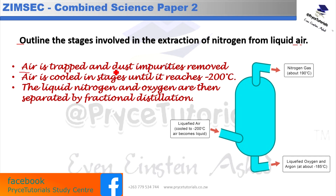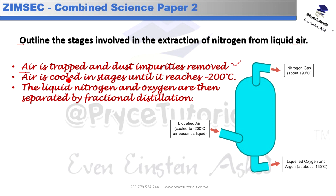First, air is trapped and dust impurities are removed. Then the air is cooled in stages until the temperature reaches about minus 200 degrees Celsius. This cooling is achieved by compressing the air and allowing it to expand, repeating this process until all the air becomes liquid.